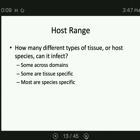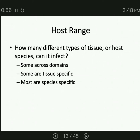Different viruses have different host ranges — meaning how many species can the virus infect? Can it infect only one species, a bunch of closely related species, or any species? Is it a generalist or is it specialized? There's also the question of tissue types, because some viruses can only infect one kind of cell in the human body. For example, HIV only infects white blood cells. Chicken pox especially only infects nervous tissue, and herpes infects nervous tissue. Some viruses are not just species-specific but are actually tissue-specific, or maybe the virus can infect one tissue type across several different species.